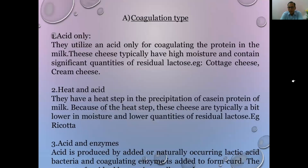Coagulation: there are two or three types available. Cheeses can be coagulated by using acid only — to coagulate the protein in the milk. Another type uses heat and acid both, with a heat step in the precipitation of casein protein; these cheeses are typically lower in moisture and residual lactose — for example, ricotta cheese. Acid coagulation gives cottage cheese, paneer, and cream cheese. And then there are acid-plus-enzyme types where acid is produced by added or naturally occurring lactic acid bacteria and a coagulating enzyme is added to form curd, which is then pressed, ripened, and molded.